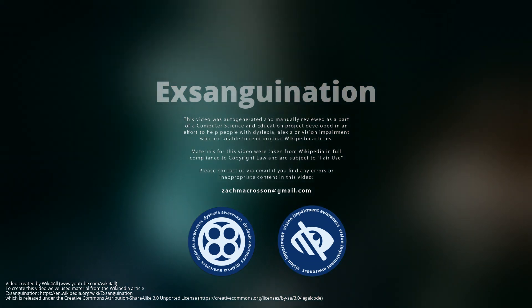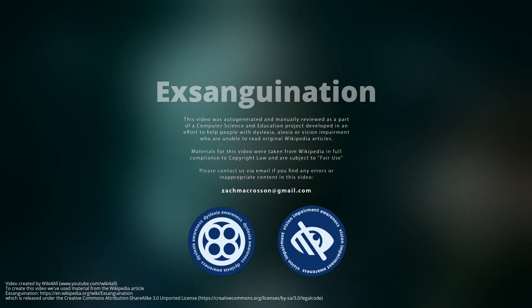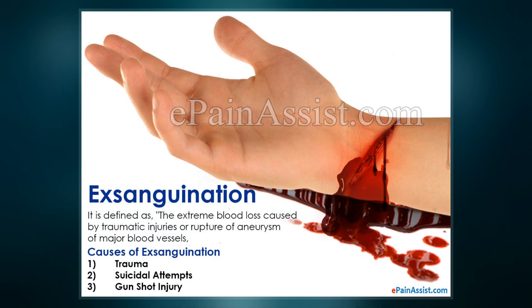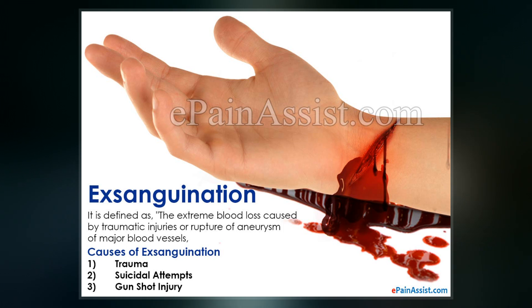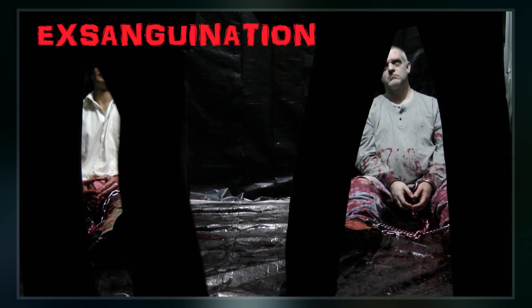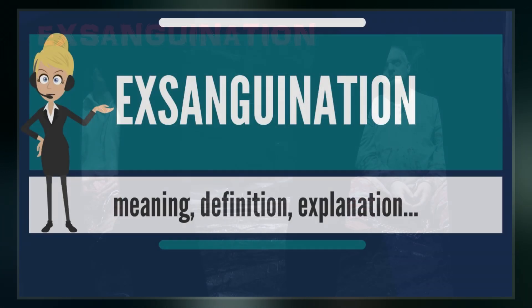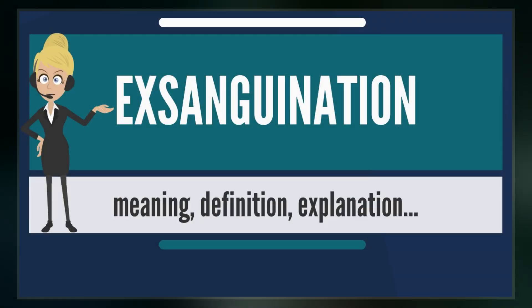Exsanguination is death caused by loss of blood. Depending upon the health of the individual, people usually die from losing half to two-thirds of their blood. A loss of roughly one-third of the blood volume is considered very serious. Even a single deep cut can warrant suturing and hospitalization, especially if trauma, a vein or artery, or another comorbidity is involved.